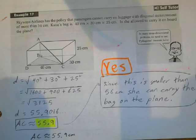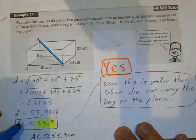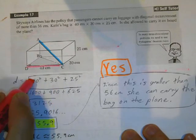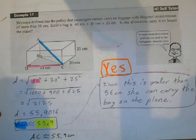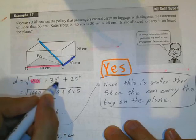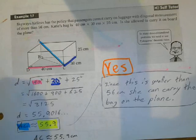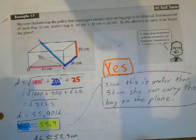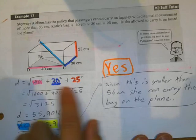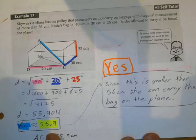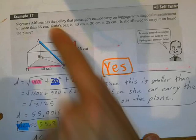So I'm trying to find this length, AC. And I've got this length, 40. And I've got this length here, which is 30. And I've got this height here, which is 25. So square all these values, add them together, take the square root, and I get the length of AC. This is smaller than 56. So yes, she can carry this on the plane.